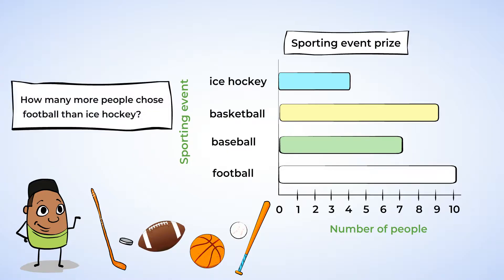Now, how many more people chose football than ice hockey? For this, we're going to need to read the bars. Football is easy to read since it's right next to the numbers: 10 people chose football. For ice hockey, we need to look where the bar ends and carefully see what number it lines up with. Only 4 people chose ice hockey. Now, since we're comparing the number of people who chose football over ice hockey, we need to subtract. We have a 10 fact, that 4 plus 6 is 10. So this means that 10 minus 4 is 6. And 6 more people chose football than hockey.